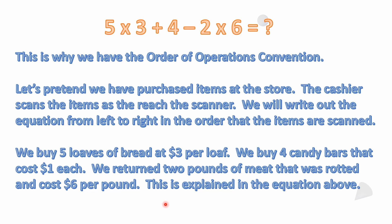This is one of the big reasons why we have the order of operations convention. For example, imagine we've purchased items at the store and the cashier scans them as they arrive. Written left to right: five loaves of bread at three dollars per loaf, four candy bars at a dollar each (which is plus four), and we return two pounds of rotted meat at six dollars per pound, so we subtract two times six.